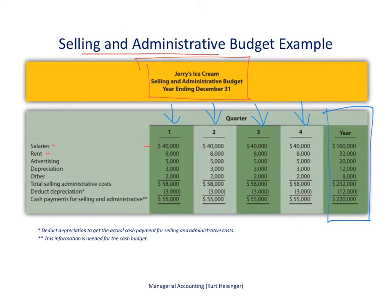Advertising is also part of this budget, along with any depreciation associated with long-term assets within those non-manufacturing departments. All of this is outside of manufacturing. There's also a catch-all other category. These are the quarterly costs associated with the selling and administrative areas of the company.